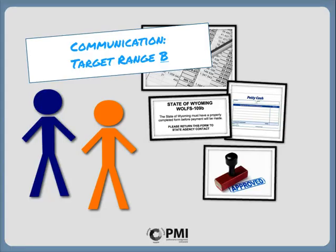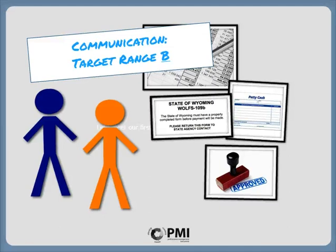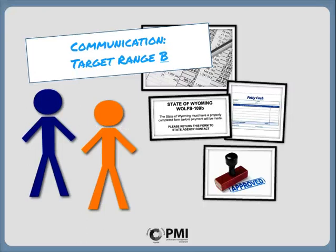After considering each of the target ranges for communication, we can see that target range B is the best fit for Blue and Orange's job duties. Please note that we didn't select target range A, because that represents a lower level of expectation, and target ranges should always be set to represent the optimum performance target.